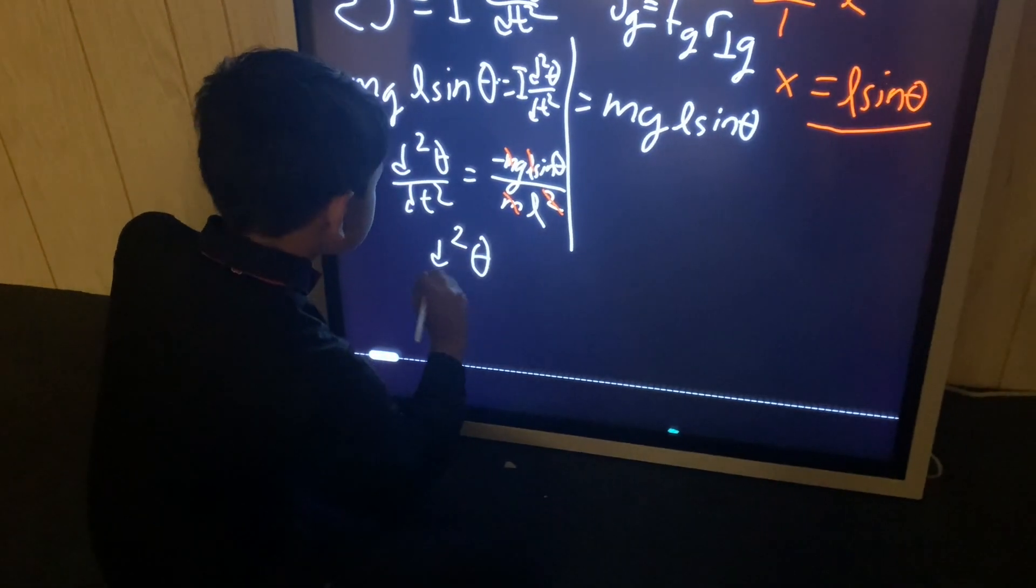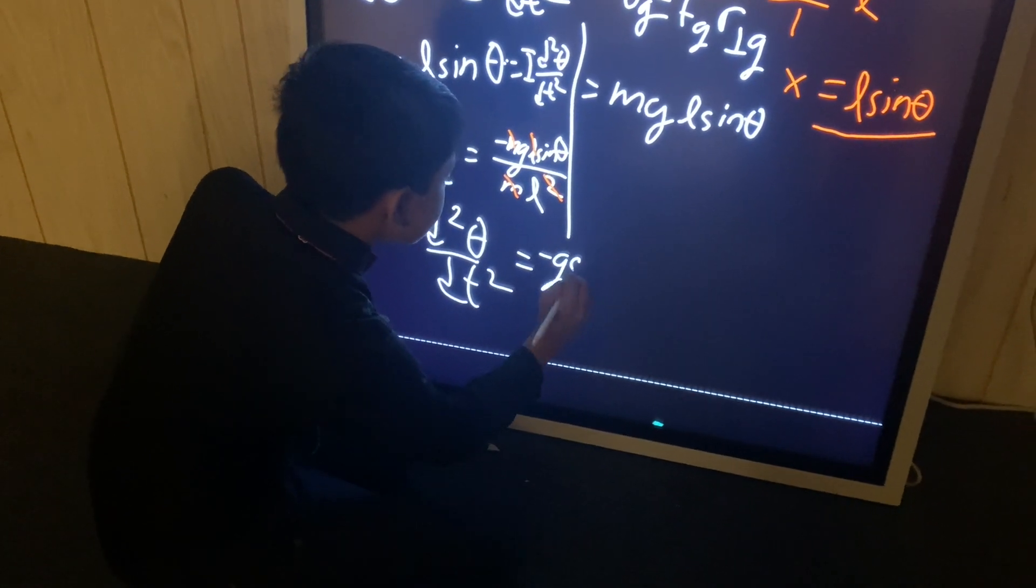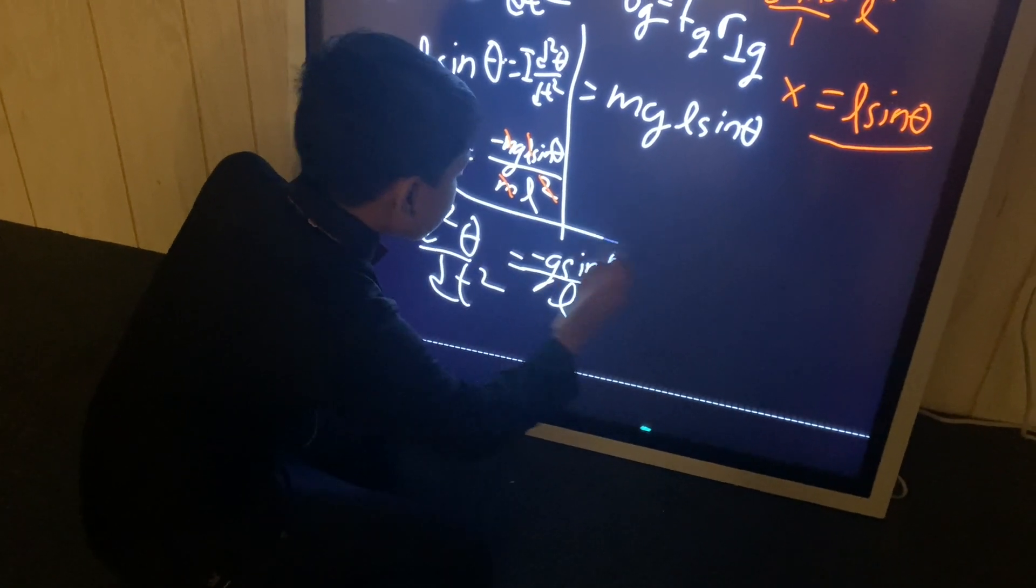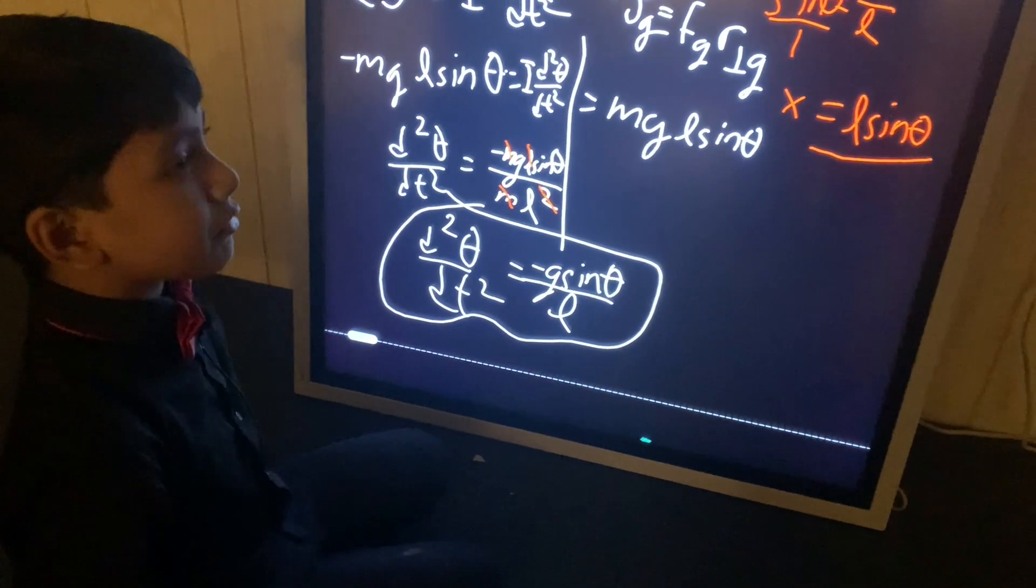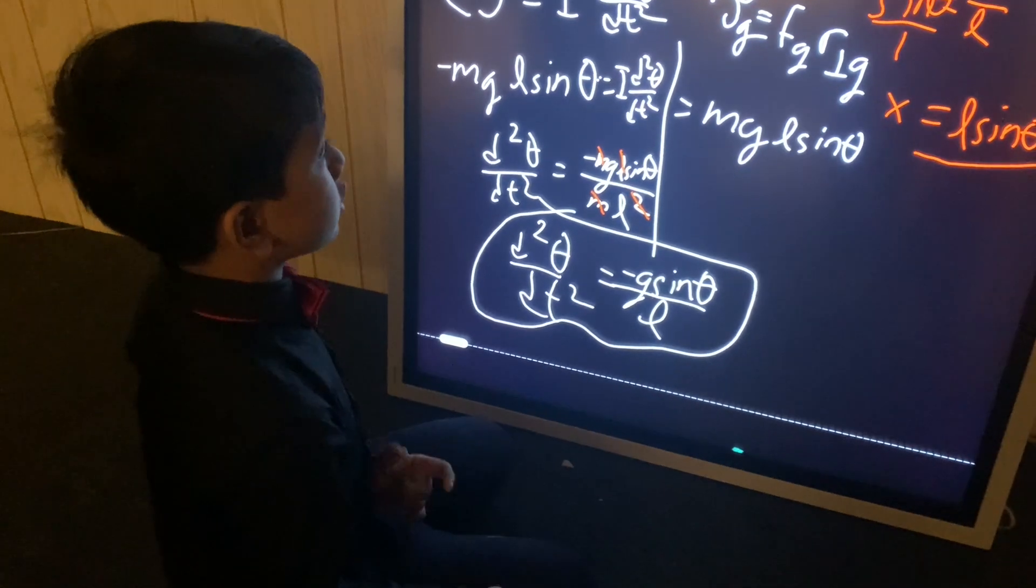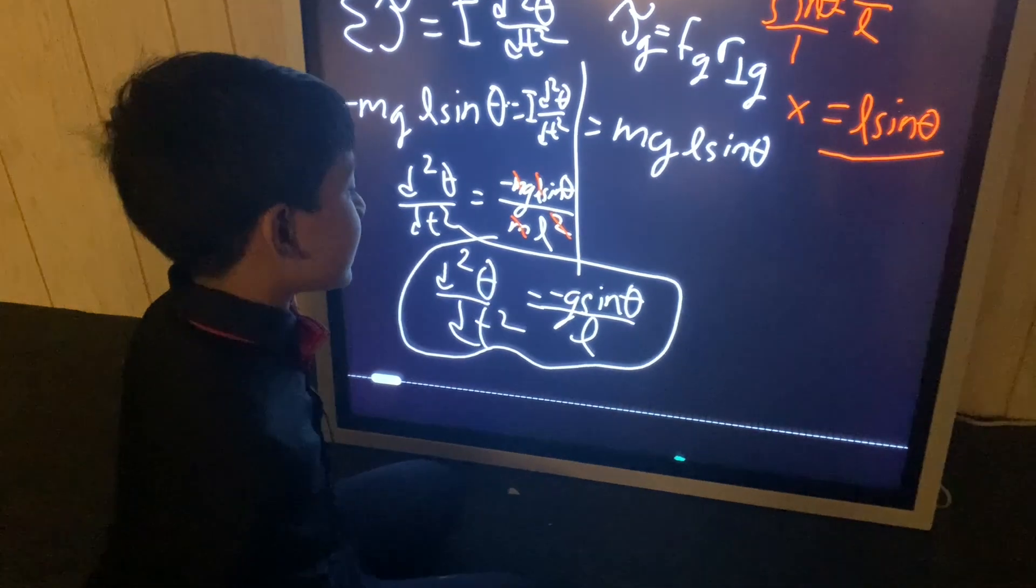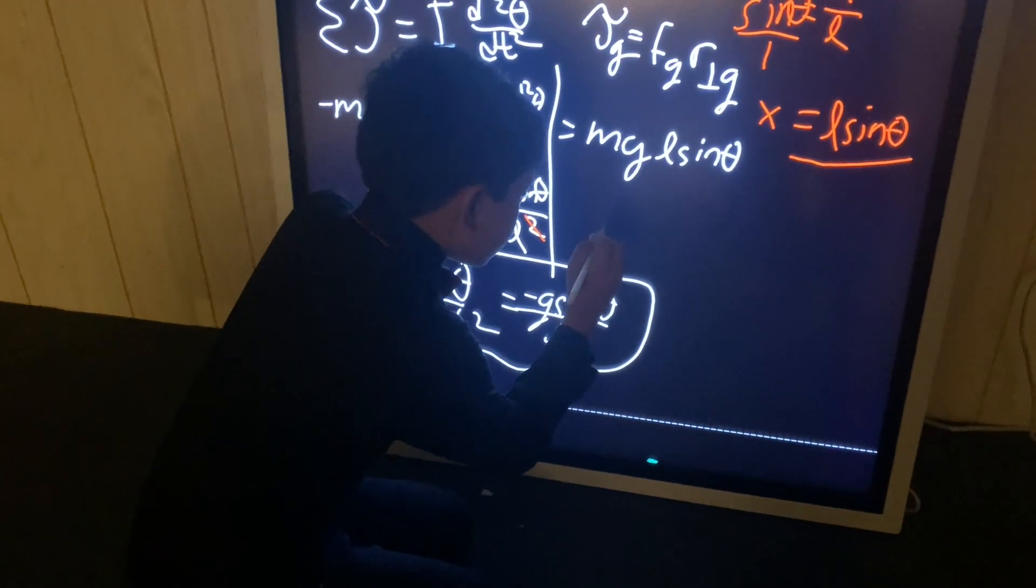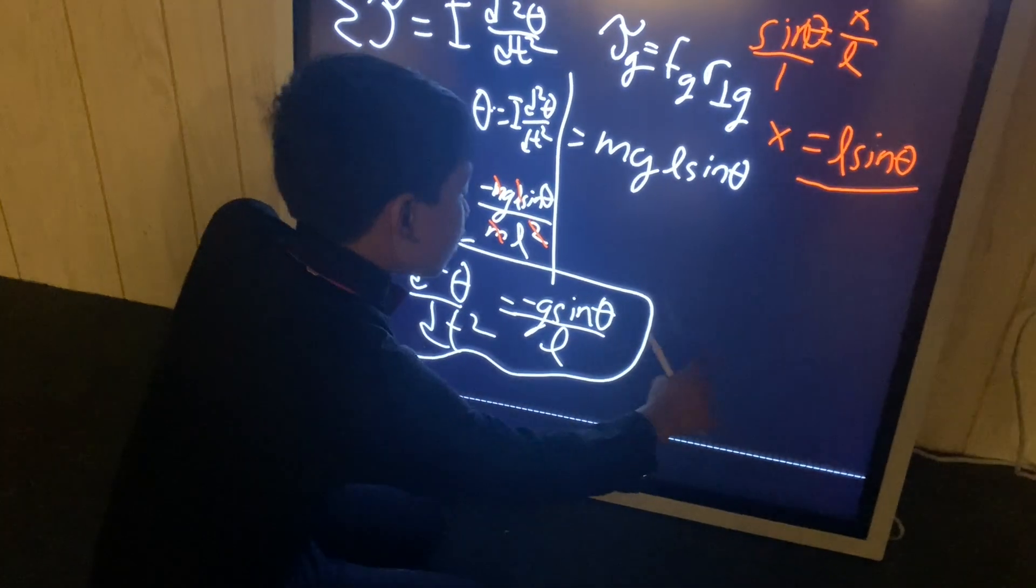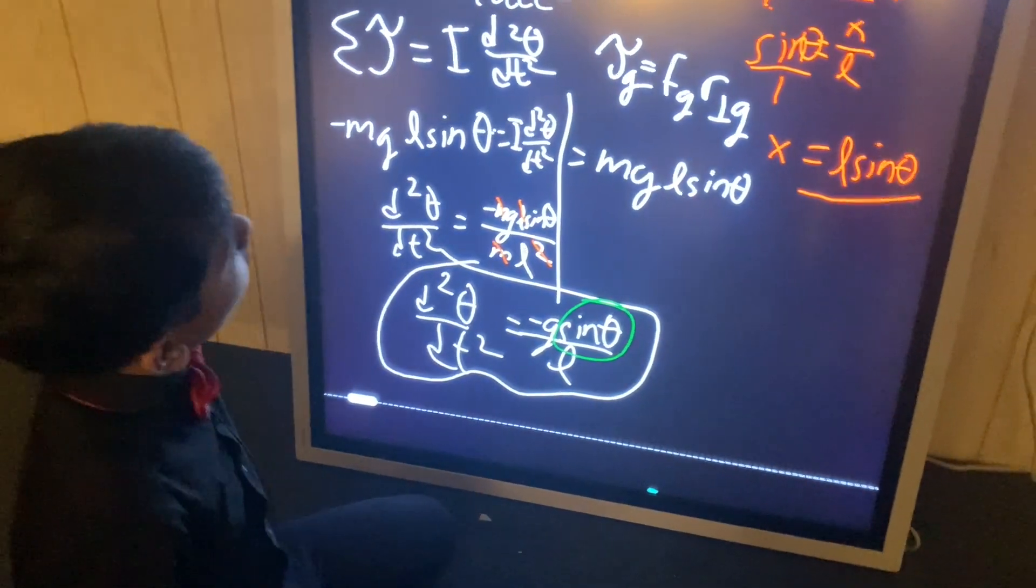So, that gives us the differential equation, d squared theta over dt squared equals negative g sine theta over L. Now, this is grand. If you look at the differential equation for regular springs that follow simple harmonic motion, you'll see that it's the exact same, except for one little tiny difference that makes all the difference. There's a sine theta here, which means, thus,